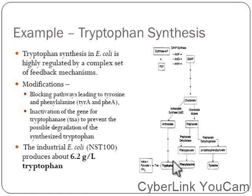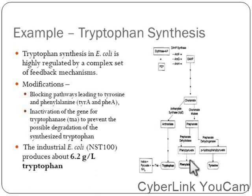The percentage of product accumulation varies by environmental conditions. So if we want to produce tryptophan, we need to block the other two pathways. Additionally, tryptophan is feedback-inhibited by the molecule itself, so inactivation of that particular gene has to be done to increase synthesis of tryptophan. These two modifications need to be carried out.